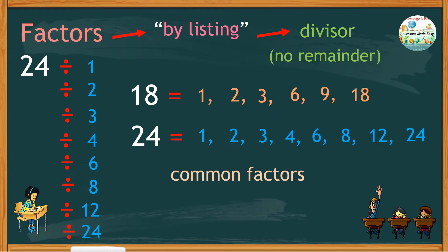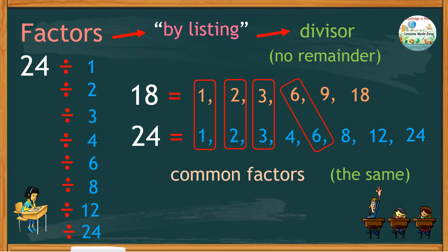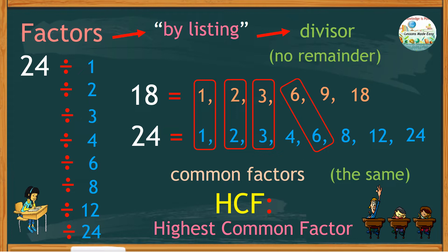When we talk of common factors, we are referring to the numbers that are the same for both 18 and 24. Those numbers are 1, 2, 3, and 6. When we say highest common factor, or HCF, we only need to look for the largest number among 1, 2, 3, and 6.